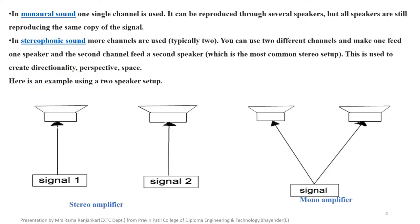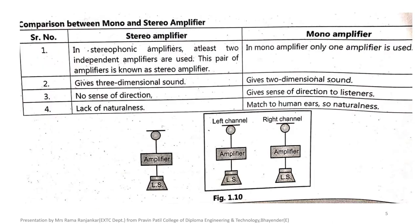In monaural sound, one signal — a single channel — is used. It can be produced through several speakers, but all speakers are still producing the same copy of the signal. In stereophonic sound, more channels are used; you can use two different channels, making one channel feed one speaker and a second channel feed a second speaker. This is used to create directionality and space, as seen in a two-speaker setup. This is the difference between mono and stereo.